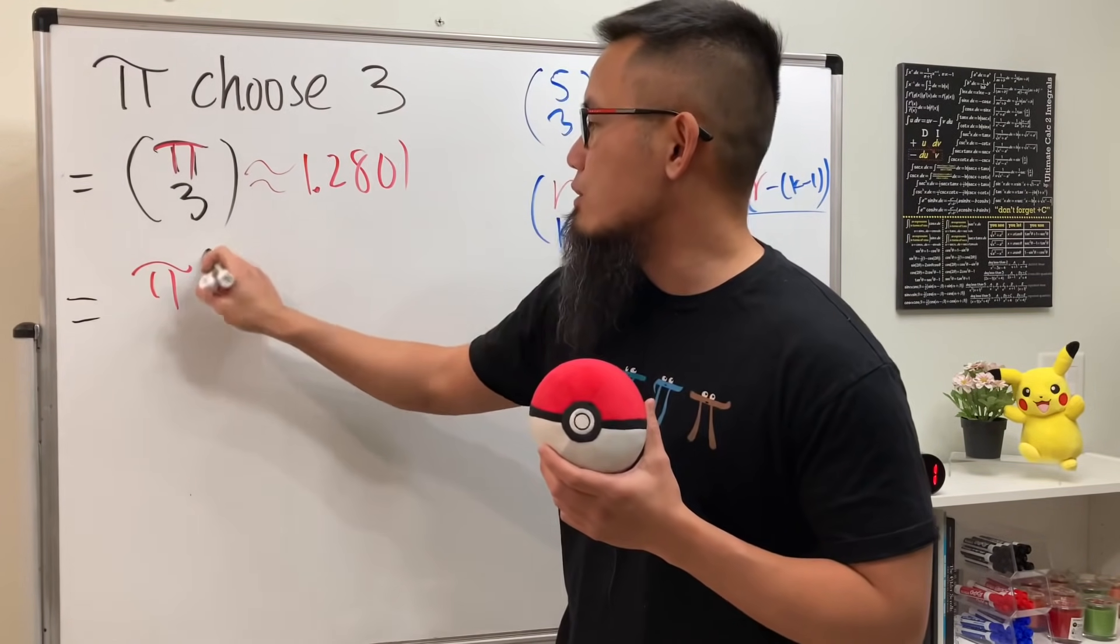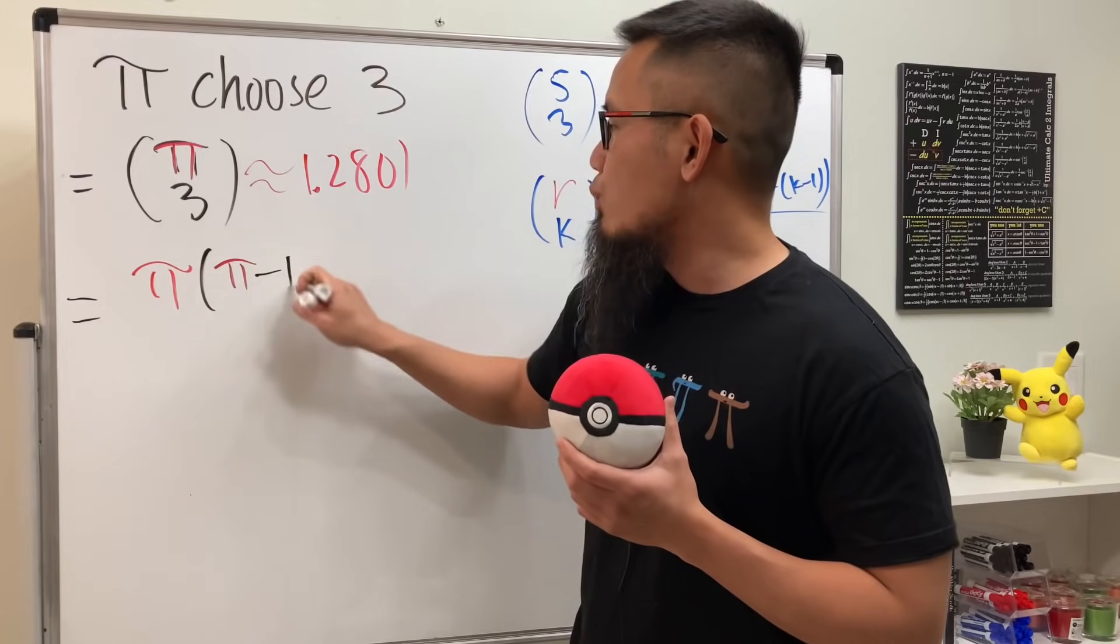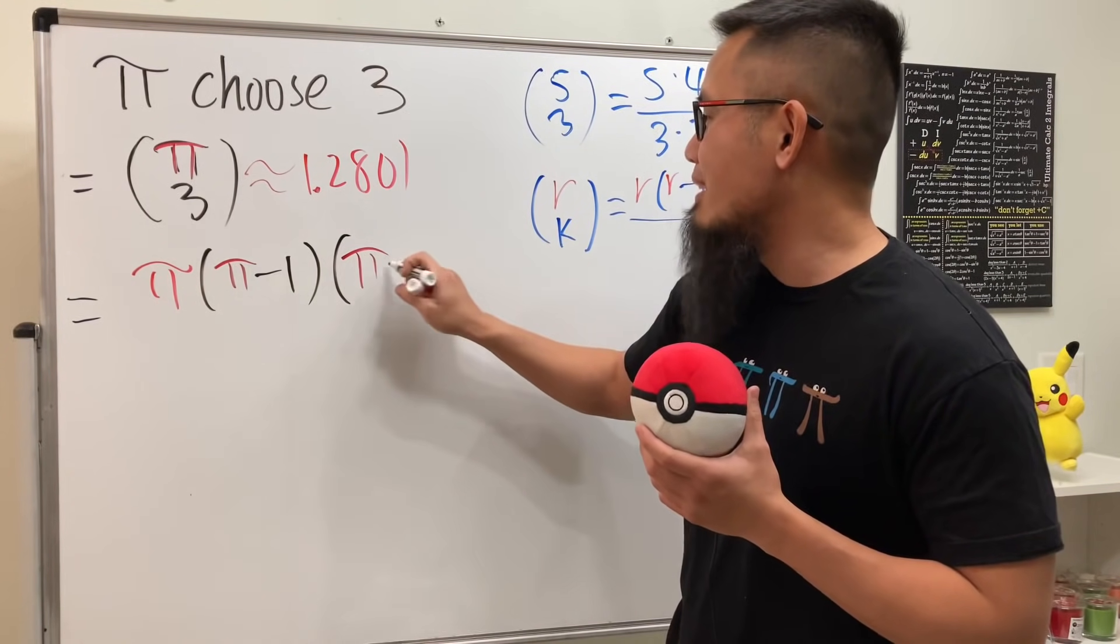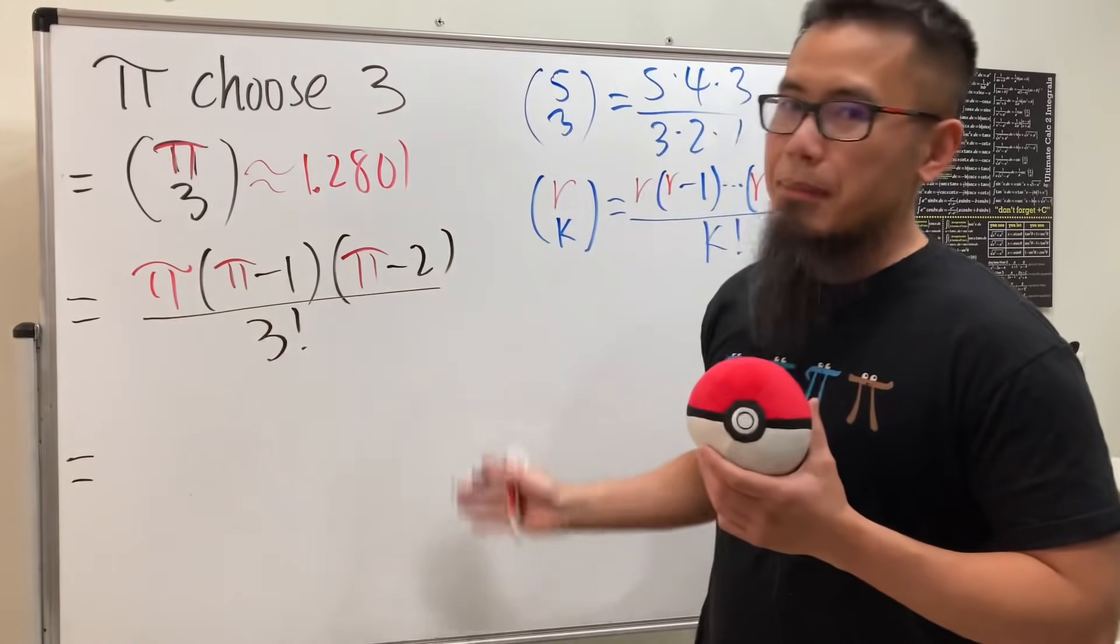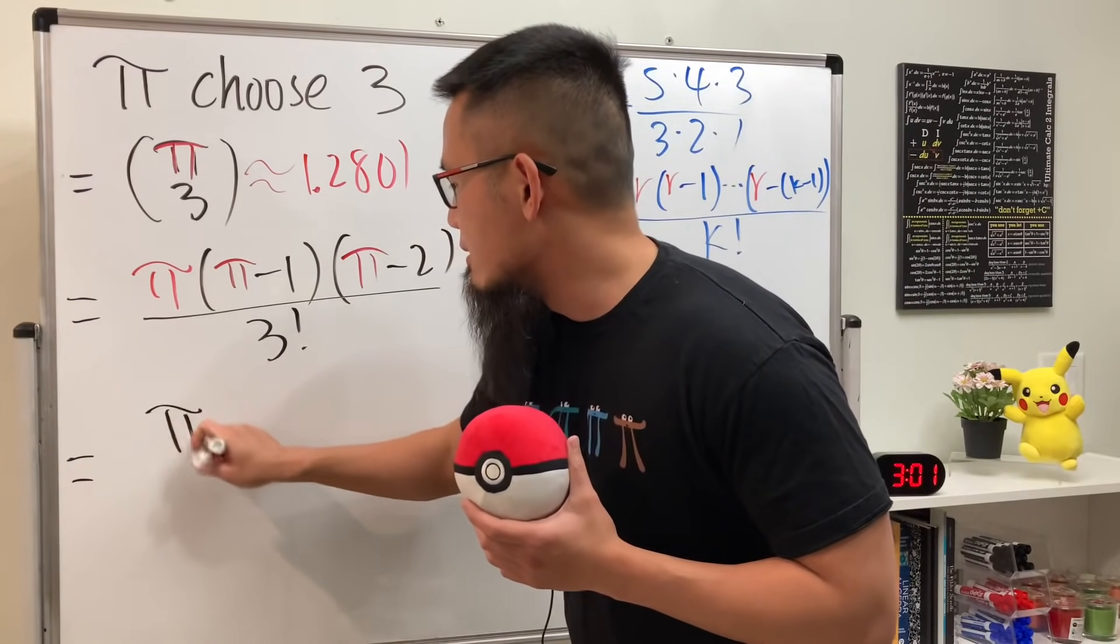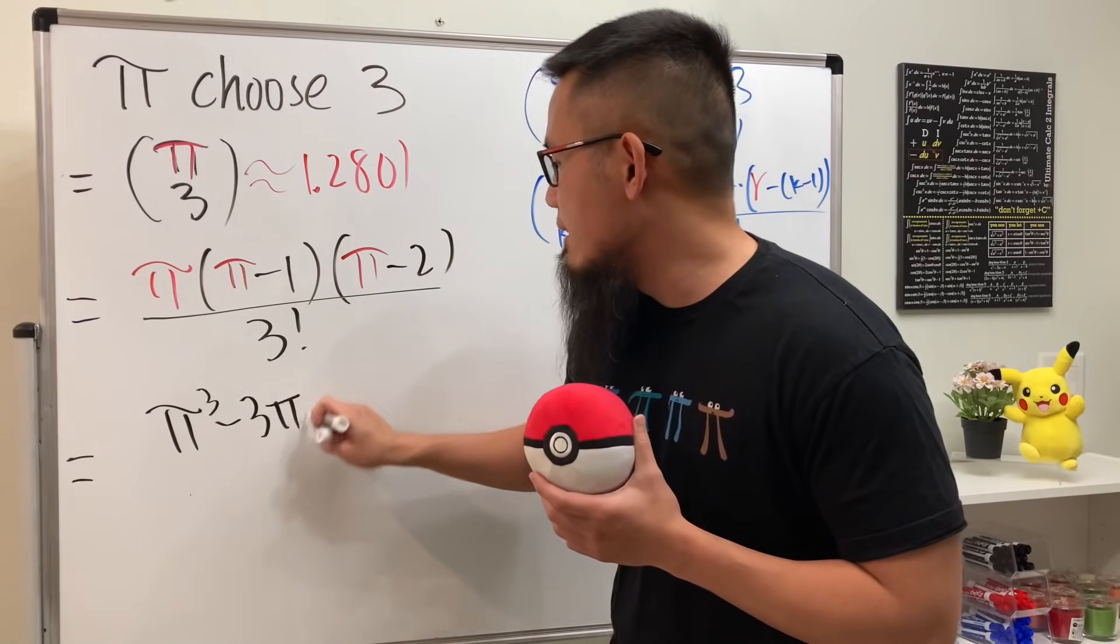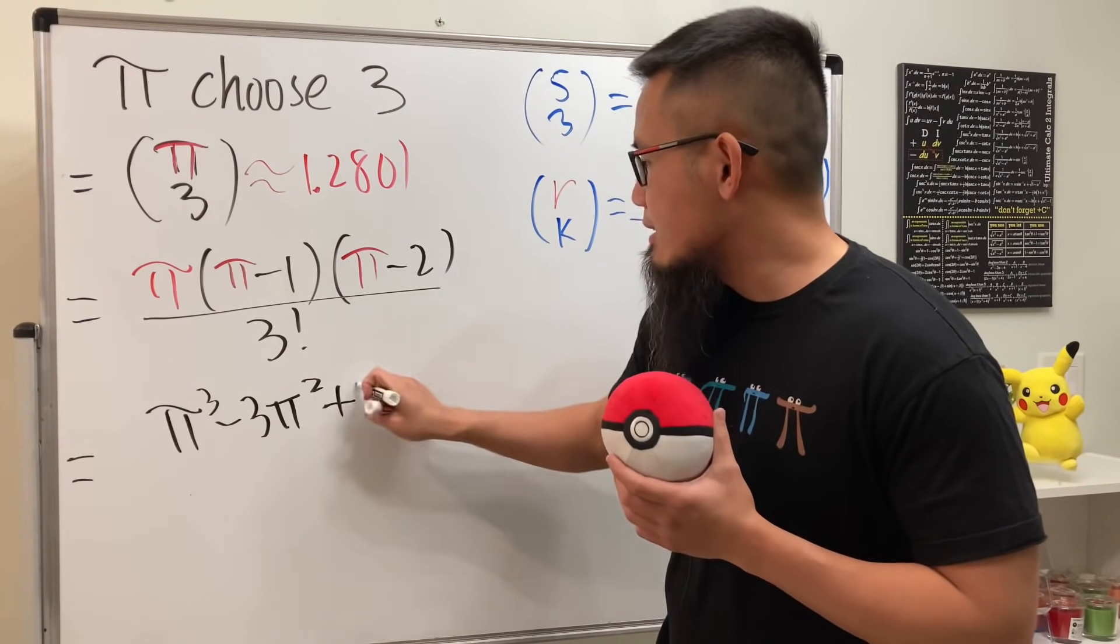And then you just multiply by pi minus one, and then you go ahead and do it one more time so pi minus two, and then divide it by three factorial. And now multiply the top, so you get pi to the third power minus three pi squared and then plus two pi.